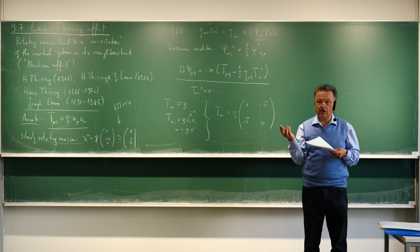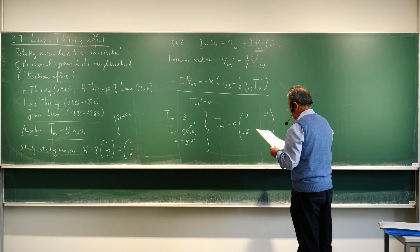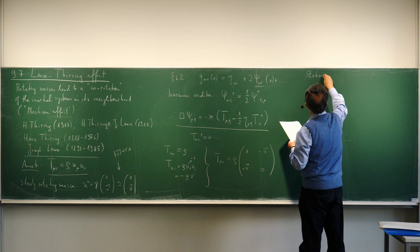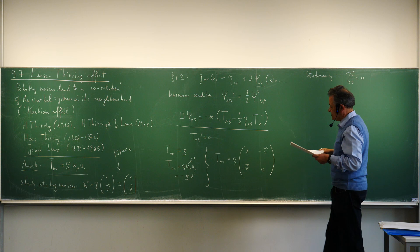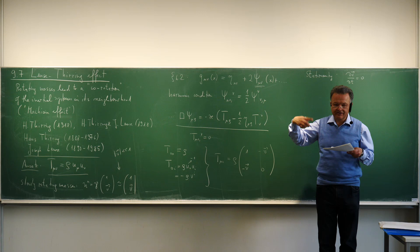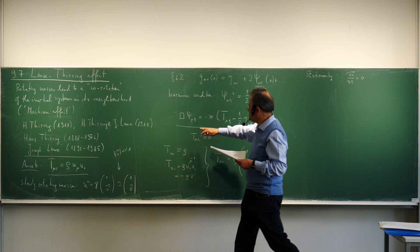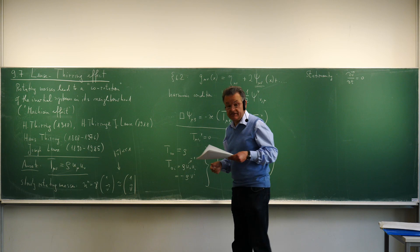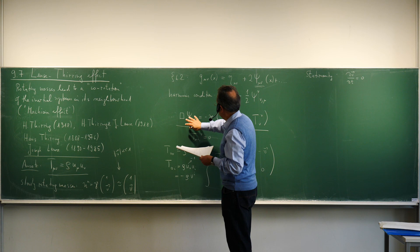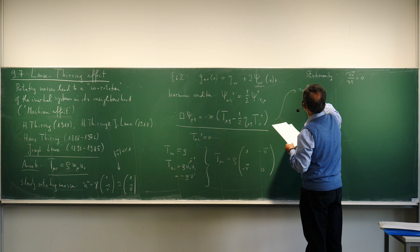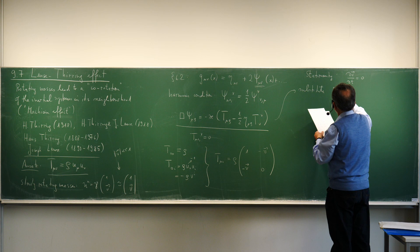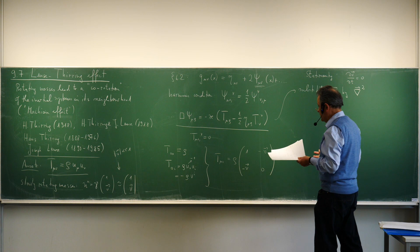Rotation of the earth and other bodies is stationary to all the degrees of accuracy we use, so we implement stationarity: dv/dt = 0, the velocity of the body is independent of time. This means we can substitute the d'Alembertian by minus the Laplacian, because we don't expect a time-dependent gravitational field.